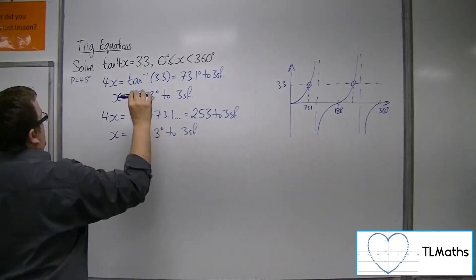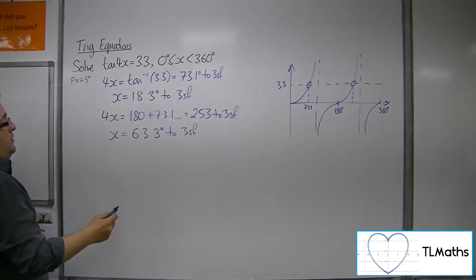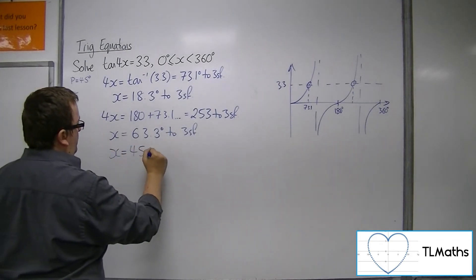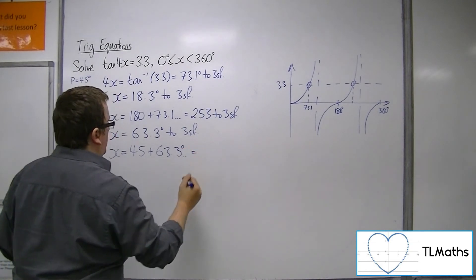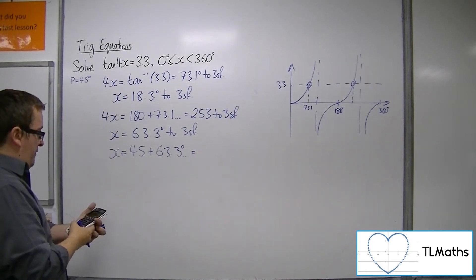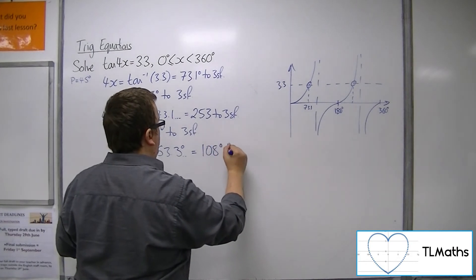So all I need to do is just keep on adding on 45 degrees to get the next solution. Okay, so add on 45 degrees, we get 108 degrees to 3 sig fig.